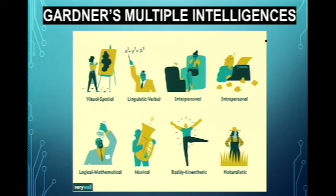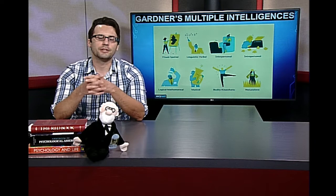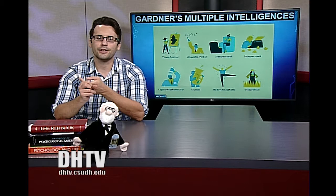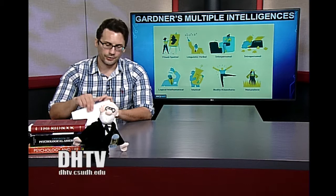Interpersonal intelligence refers to your ability to work with and relate to other people, while intrapersonal intelligence means having strong insight about yourself. Gardner also included linguistic-verbal and logical-mathematical intelligences, which are the domains typically covered by IQ scores, but he maintained that intelligence is far broader than just those two areas.